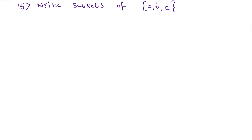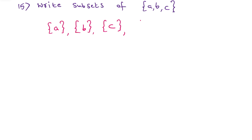Moving to the next question: write the subsets of set {A, B, C}. Writing subsets is very easy. What we need to do is first write the individual elements as sets, then combine 2 elements together, then 3 elements together. Let us start with individual elements: {A}, {B}, {C}.